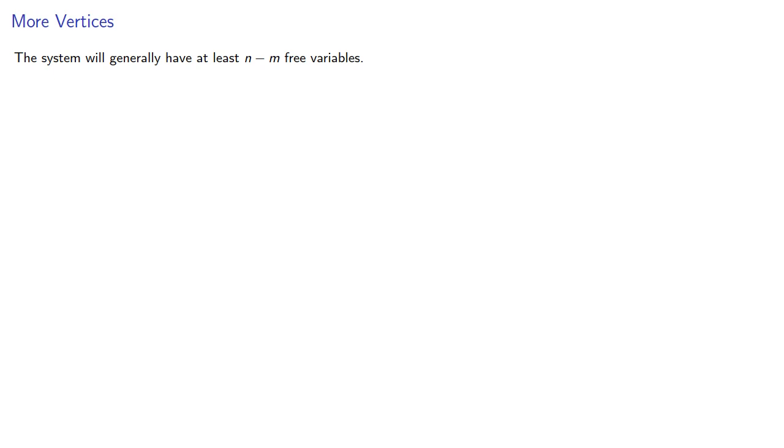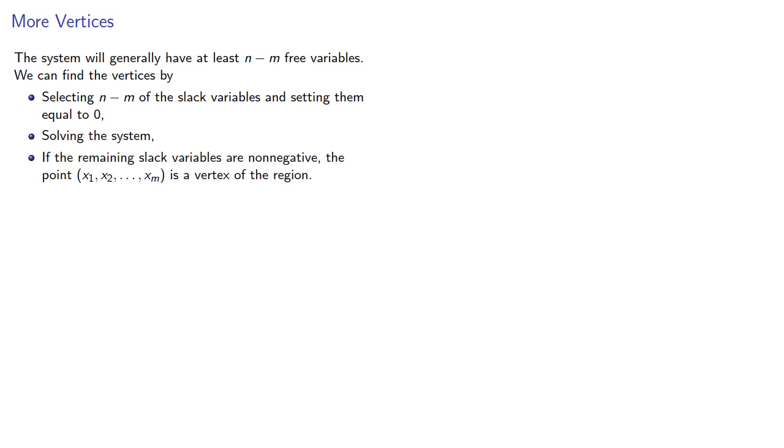Now, the system will generally have n-m free variables. This means we can find the vertices by selecting n-m of the slack variables and setting them equal to zero, solving the system, and if the remaining slack variables are non-negative, then the point is a vertex of the region.